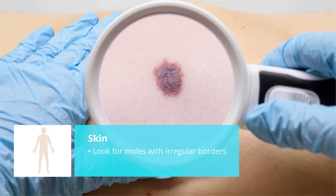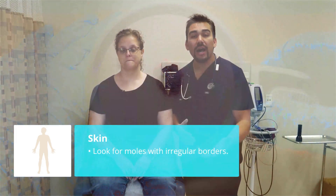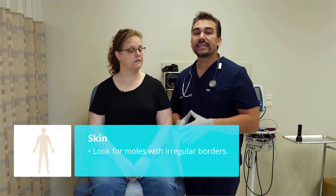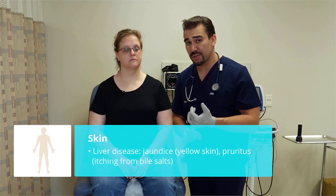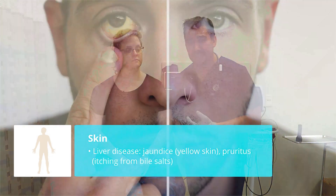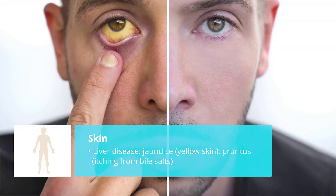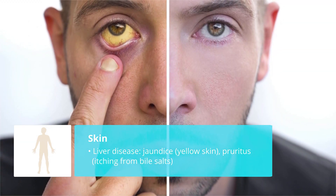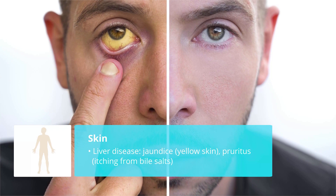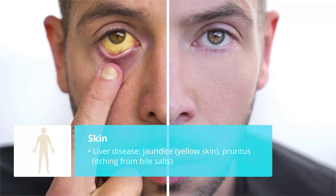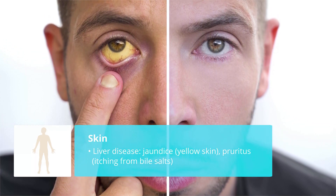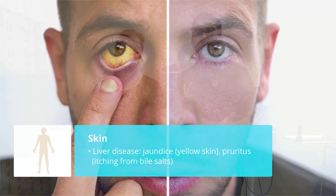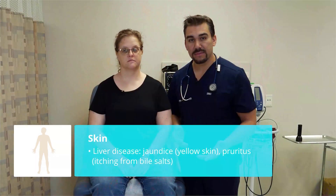A really common finding is liver disease patients — either cirrhosis or hepatitis. We'll see jaundice, that yellow skin. We might even see pruritus, that itchy skin, from all those bile salts.